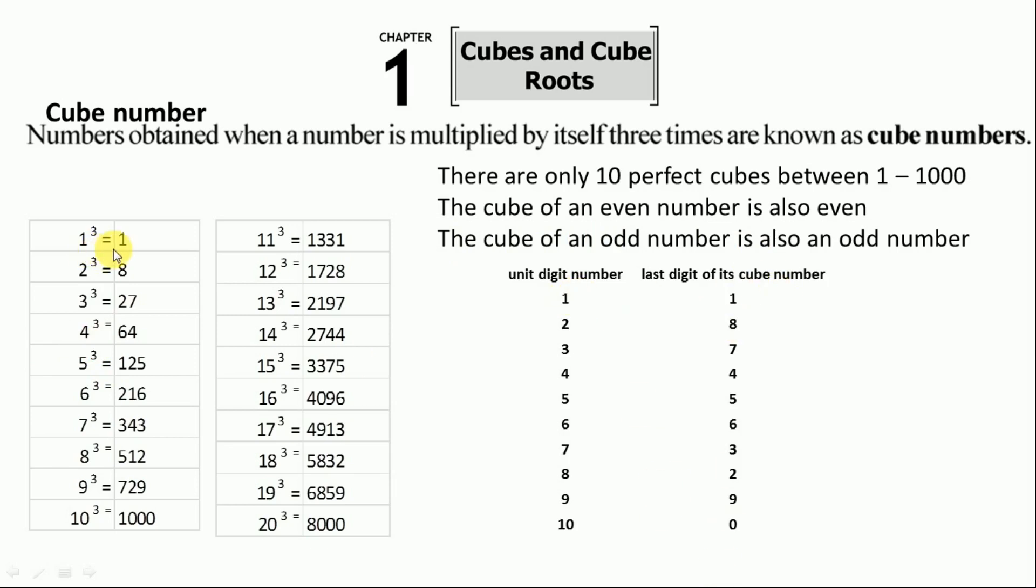The last unit digit of cubes: 1 cube is 1, 2 cube is 8, 3 cube is 27, and 4 cube is 64. The last number is 4. Likewise, we arrange all the numbers here. If we take 21 cube, then its last number is 1. Likewise, if we take 22 or 52, then their cube contains the last number 8. So remember this chart.